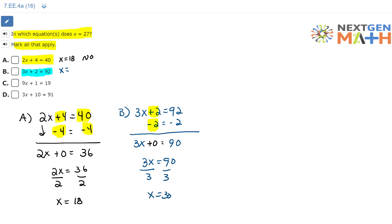So for B, x equals 30, so this is a no. Now let's move on to C. 9x plus 1 equals 19. We will rewrite C right here.